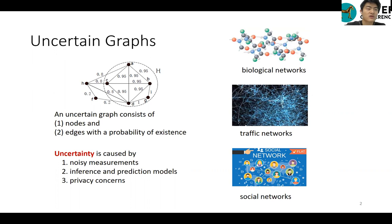In an uncertain graph, every edge has an existence probability. Consider this uncertain graph. The edge between HF has an existence probability of 0.02.